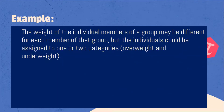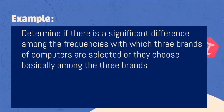For example, the weight of the individual members of a group may be different for each member, but the individuals could be assigned to one of two categories — either overweight or underweight. Another example: determine if there is a significant difference among the frequencies with which three brands of computers are selected among the three brands.